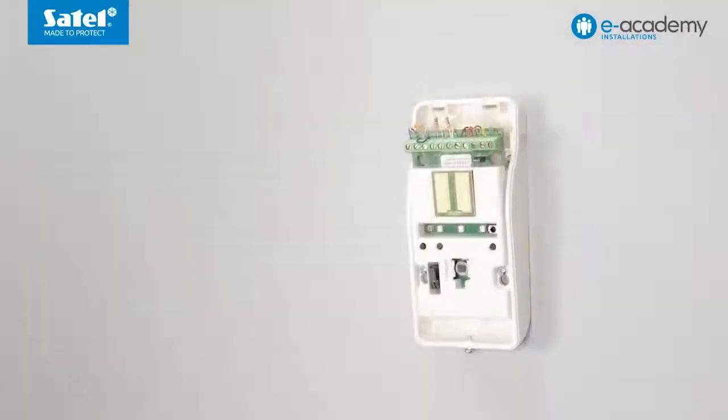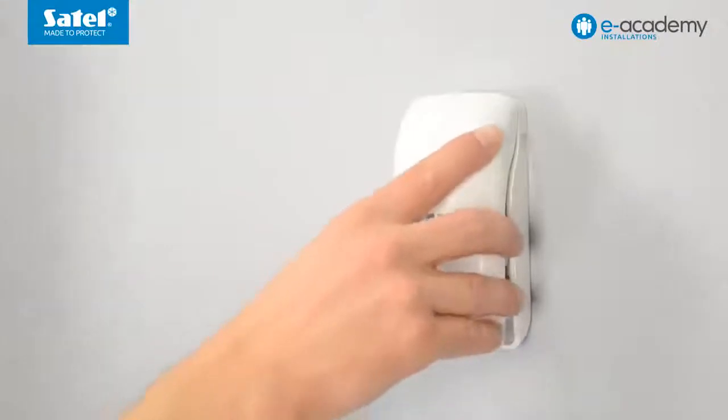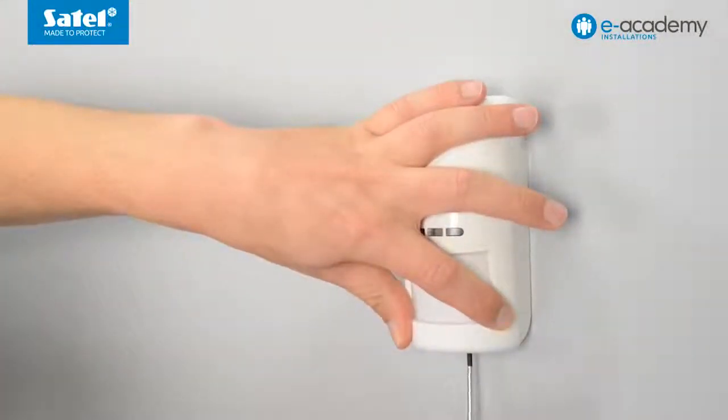Close the detector enclosure to complete the installation. To do this, insert the detector cover catches into the holes provided at the top of the detector base, then close the enclosure and tighten the closing screw at the bottom of the enclosure.